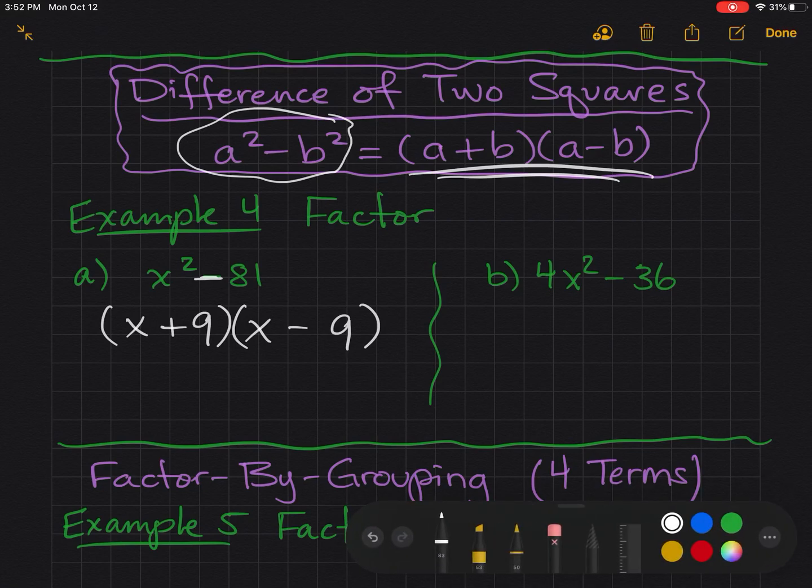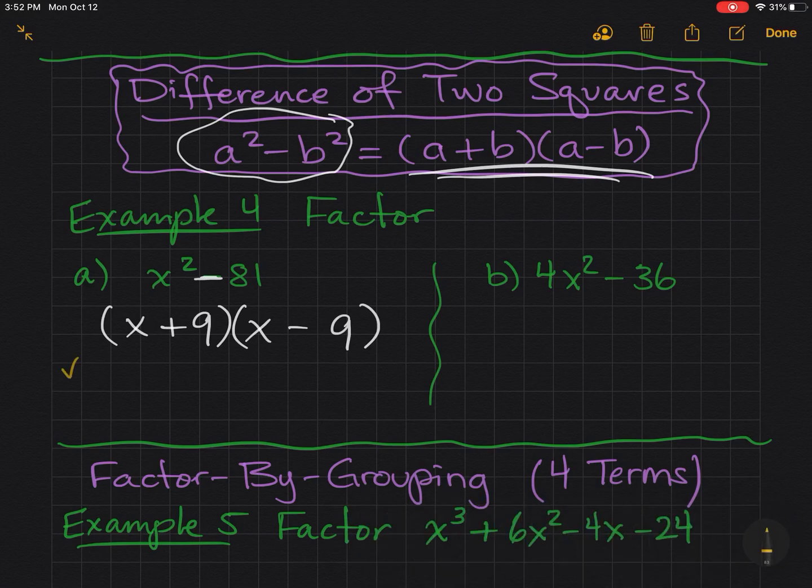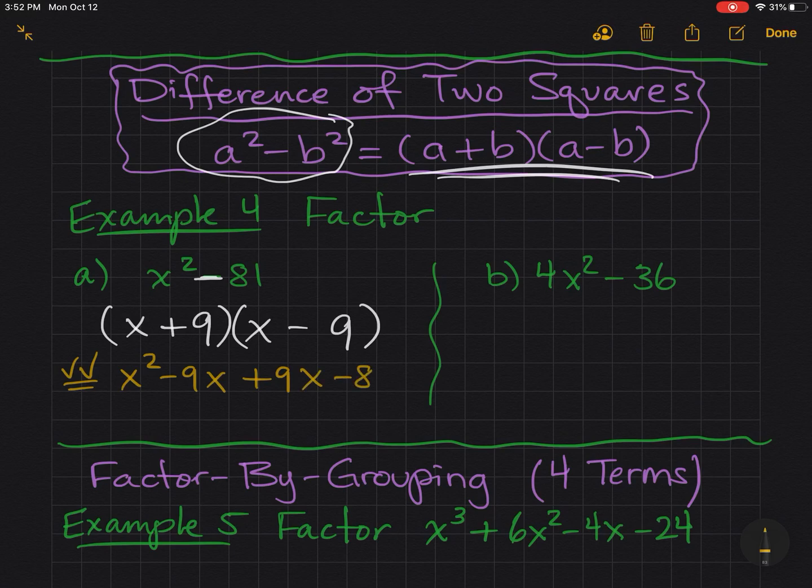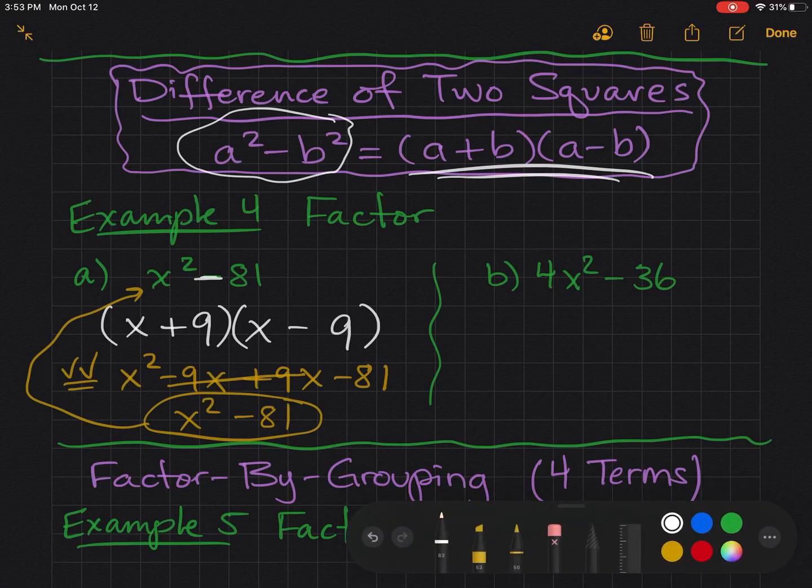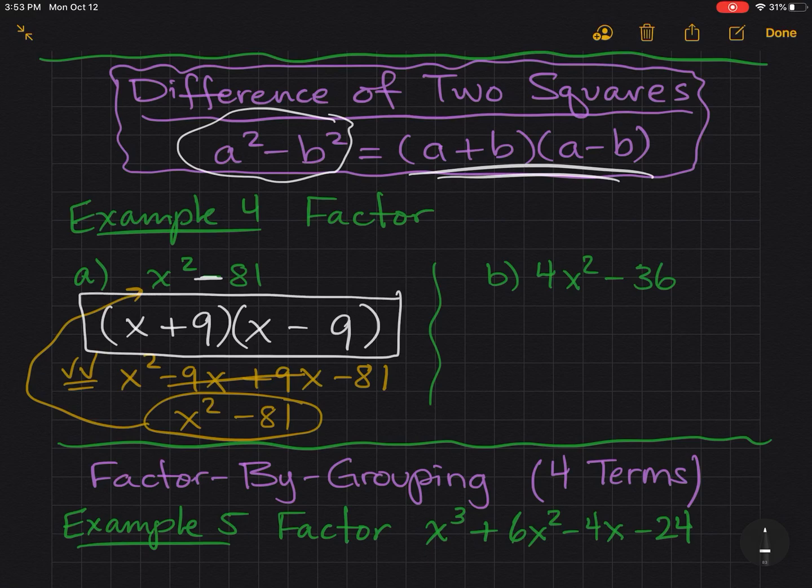This only works if this is a minus sign. If it's a plus sign, we have to use imaginary numbers. I'd like to show you that if I double check this, if I do first, I get x squared, outer is 9x, inner is negative 9x. And last gives me negative 81. Notice with the plus minus, those cancel out. And I'm just left with x squared minus 81. So indeed, it's what I started with. So this checks out.